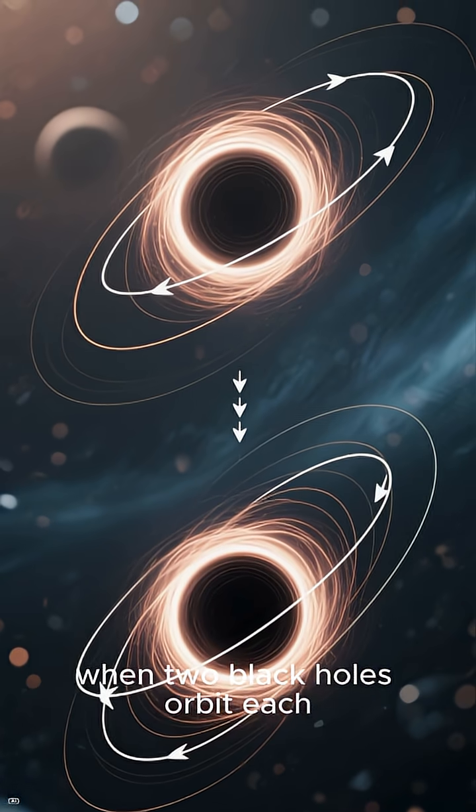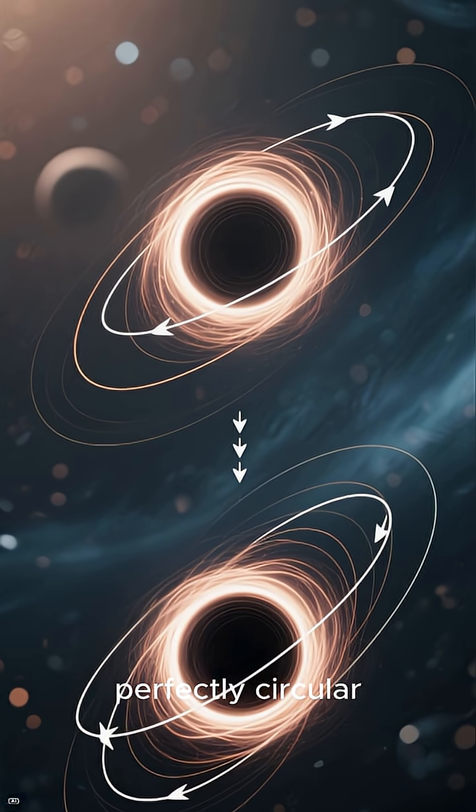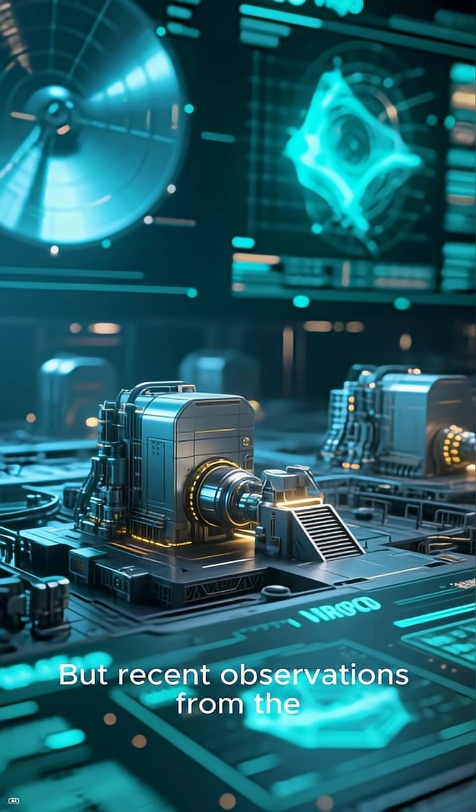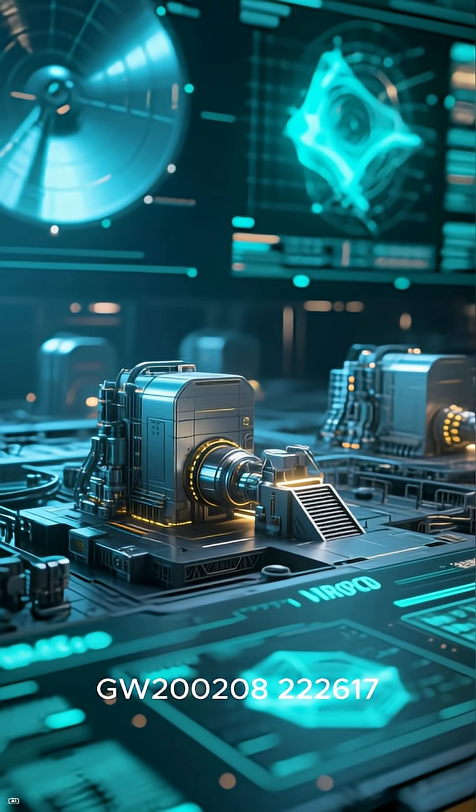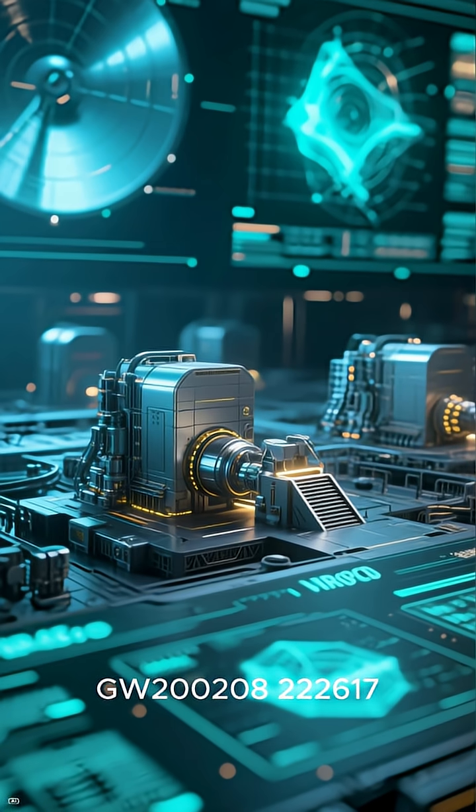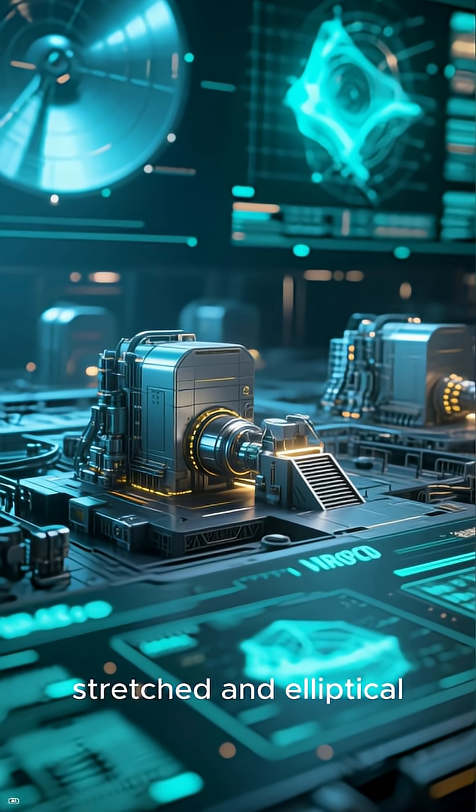Usually when two black holes orbit each other for a long time, their paths become nearly perfectly circular. But recent observations from the LIGO and Virgo gravitational wave observatories captured event GW20208222617, showing an orbit that was stretched and elliptical.